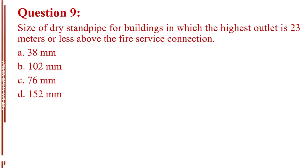Question number nine. Size of dry standpipe for buildings in which the highest outlet is 23 meters or less above the fire service connection. A. 38 millimeters. B. 102 millimeters. C. 76 millimeters. D. 152 millimeters. The answer is Letter B, 102 millimeters.